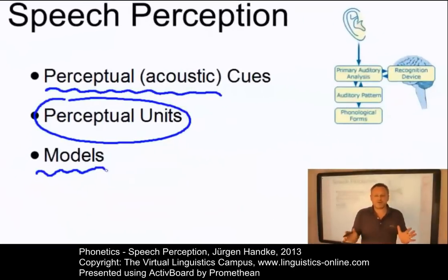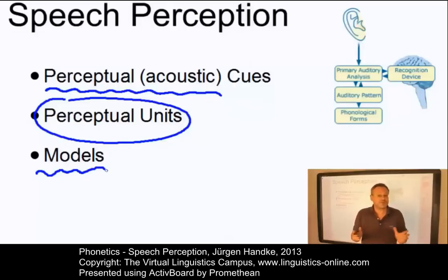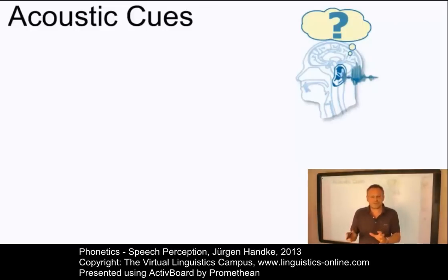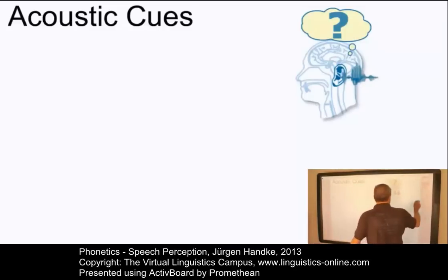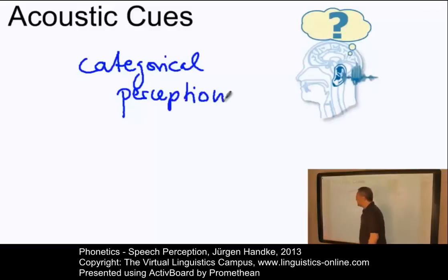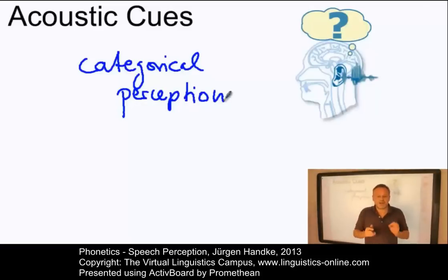The speech signal presents us with far more information than we need in order to recognize what is being said. Still, our auditory system is able to focus our attention on just the relevant auditory features of the speech signal — features that have come to be known as perceptual or acoustic cues. The importance of these small auditory events has led to the assumption that speech perception is not a continuous process, but rather a phenomenon that can be described as discontinuous or categorical — what is characterized as categorical perception. These cues are not perceived along a continuum but as fixed categories.